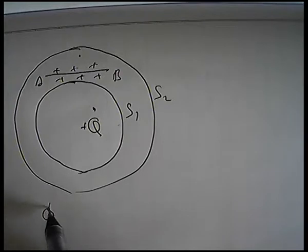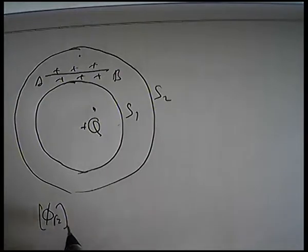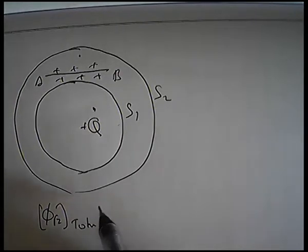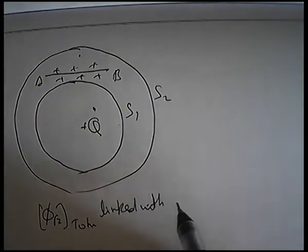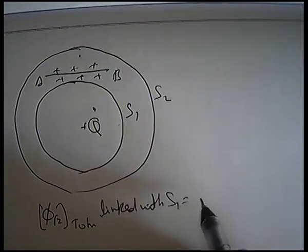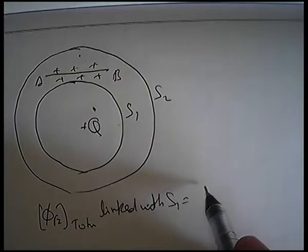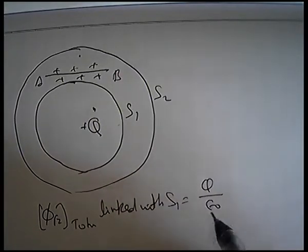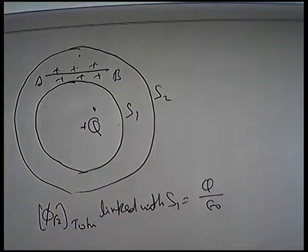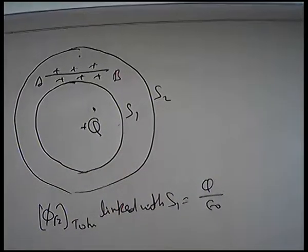Simple सी बात है — phi E total linked with S1 आपका बन जाएगा Q by epsilon 0.